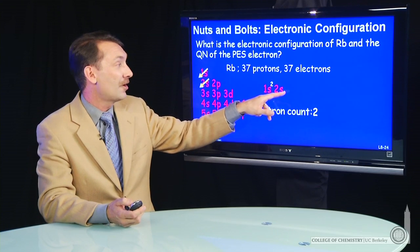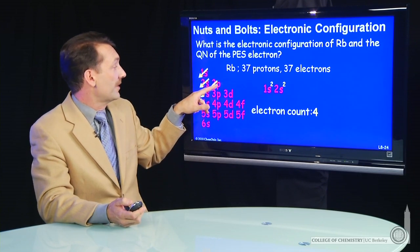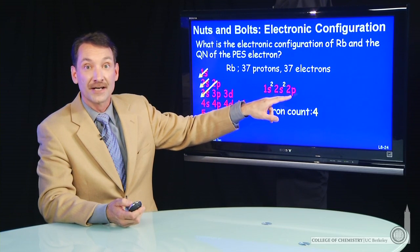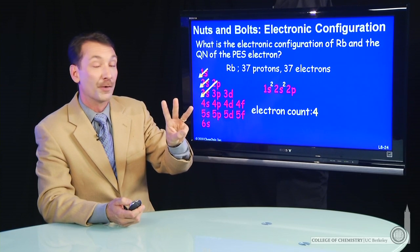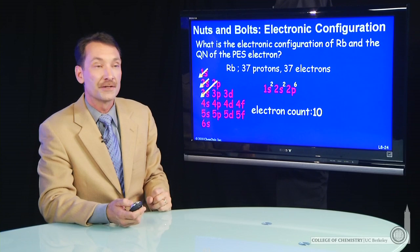Next we'll fill the 2s. It also holds two, bringing our count to four. Then we fill the 2p and the 3s. The 2p holds six electrons. Remember, three equivalent p orbitals, each holding two electrons is six. It brings our total count to 10.